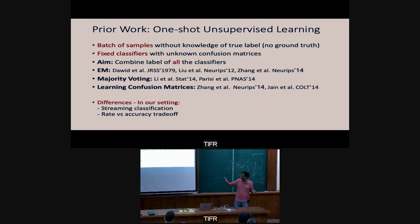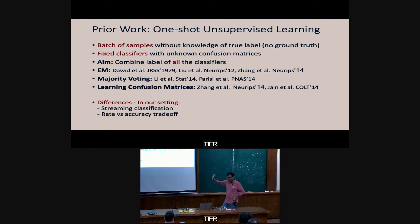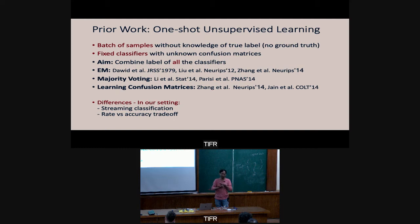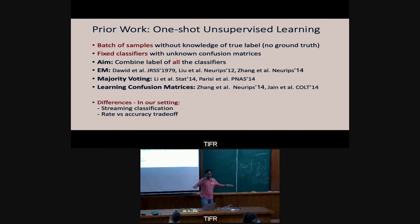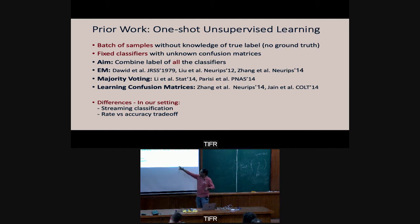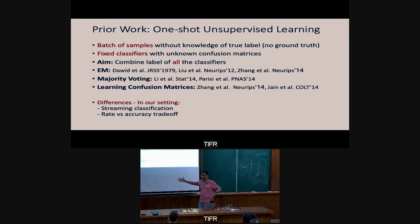Three lines of work relate to this. First, one-shot unsupervised learning: a batch of samples without ground truth, unknown confusion matrices, and you label everything at the end. Every image is sent to all classifiers, labels are combined using EM-like algorithms, voting algorithms, or tensor decompositions. Second, budgeted crowdsourcing: finite batch of samples, classifiers arising from a crowd — each call is an independent copy, so you can boost accuracy by calling again. You get a budget of total actions and want maximum accuracy. This is the work of Karger, Devavrat, and Sewoong, and subsequent work.